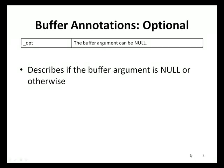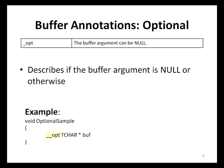The first buffer annotation category is the optional category, which indicates whether or not a buffer argument can be null. The annotation _opt is used to indicate if a buffer argument is allowed to be null. If no annotation is specified, then it is assumed that the pointer to the buffer must not be null. In sample code illustrating this, a function called optional_sample is declared which takes one argument called buff, a pointer to a TCHAR type, where _opt indicates that buffer can be null.